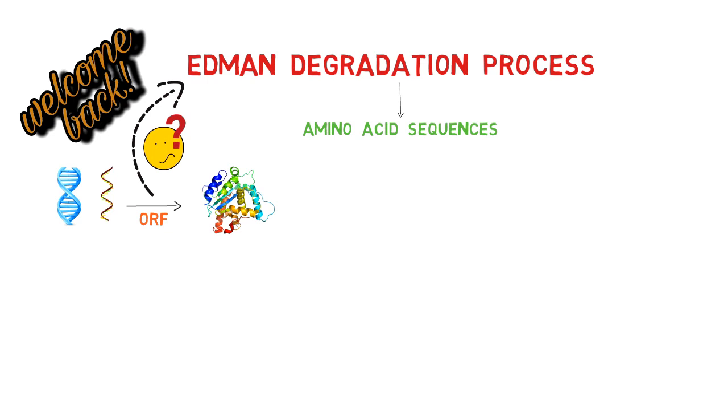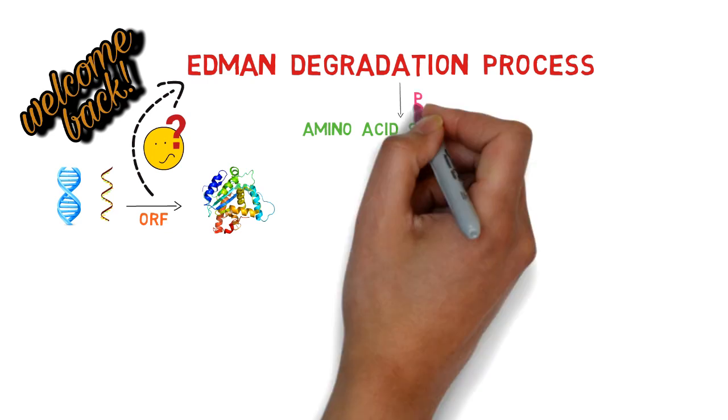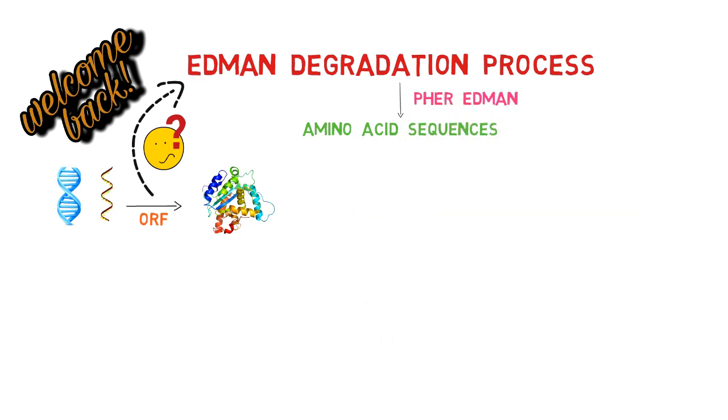Edman Degradation, developed by Per Edman, is a method of sequencing amino acids in a peptide.